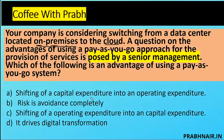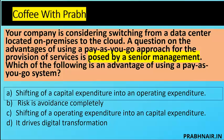Option B says risk is avoided completely — risk cannot be avoided. When you transfer operations to the cloud, you transfer responsibility but not accountability, so B is eliminated. Option C says shifting of operating expenditure into capital expenditure, which is not true — it is the reverse. Option D says it drives digital transformation, which is true but can also be achieved in on-prem. As a cloud security consultant, pay-as-you-go is all about shifting CapEx to OpEx — the answer is A.